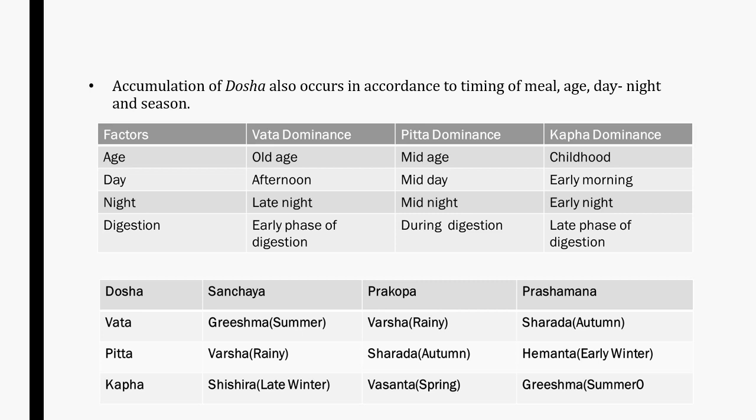Accumulation of doshas also occurs in accordance with timing of meal, age, day, night and season. For example, Pitta dominance takes place in old age while Kapha dominance takes place in childhood. Discussing Sanchay, Prakop and Prasar in different seasons: Sanchay of Vata takes place in Grishma Ritu, while Prakop occurs in Varsha Ritu and Prashaman in Sharad Ritu.